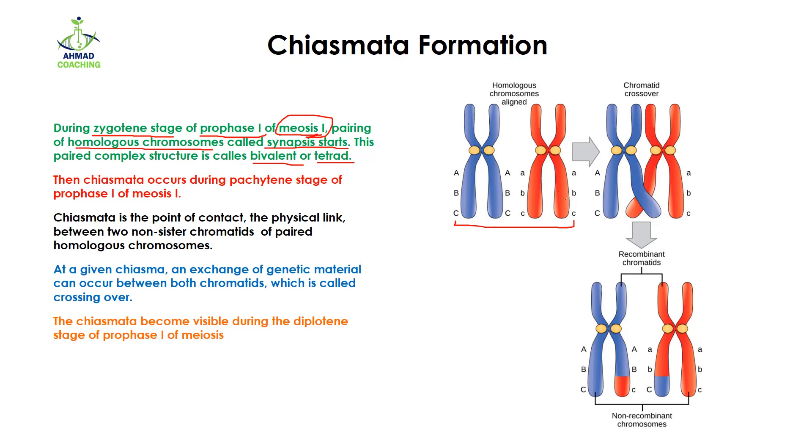After the pairing or the synapsis of chromosomes, the Chiasmata formation takes place. The Chiasmata occur during the pachytene stage of prophase 1 of meiosis 1. Now, what is Chiasmata?